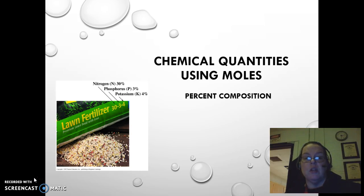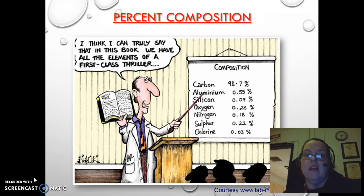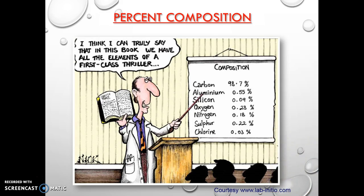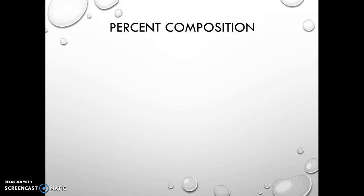So those numbers on the sides of the bags actually represent the percentages. So in this case, 30% nitrogen, 3% phosphorus, and 4% potassium. So I think I can truly say that in this book we have all of the elements of a first class thriller. Just a little funny to kind of get us through the next portion here.